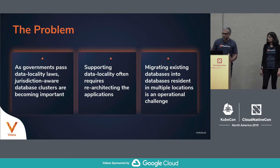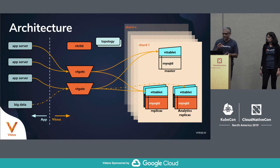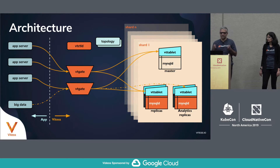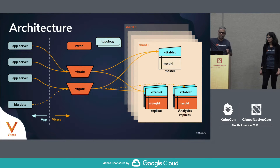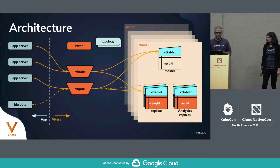You have existing monolithic databases sitting somewhere — maybe some are in the jurisdiction you want, some are not. Migrating those databases and splitting data, because you might have users spanning multiple jurisdictions, becomes an operational nightmare. So those are the problems we're going to address using Vitesse. I'm going to start by talking about Vitesse concepts, and once you have enough understanding, I'll talk about the solution. Then Deepthi is going to do a demo showing four clusters running across four Kubernetes clusters in four different parts of the world.